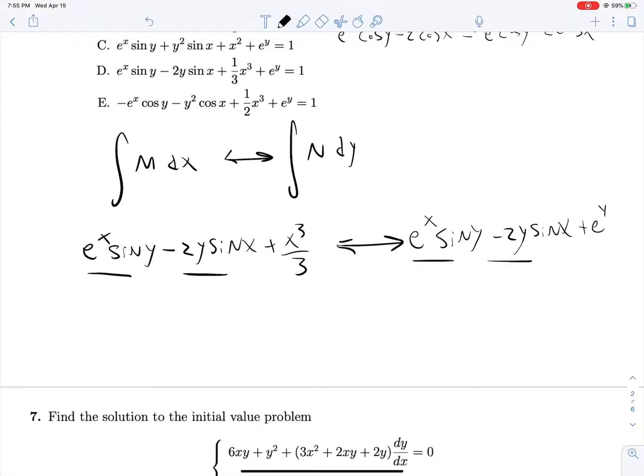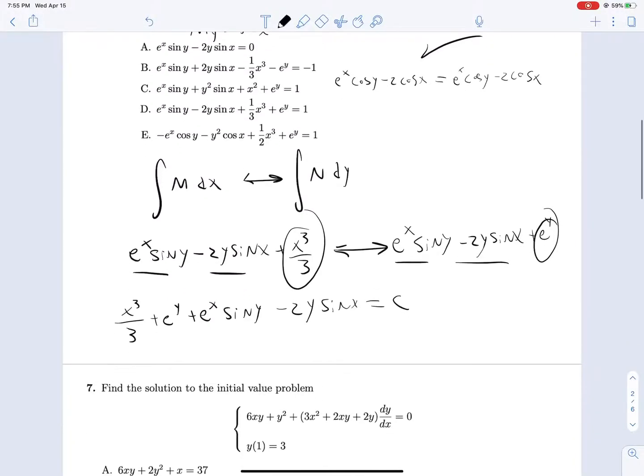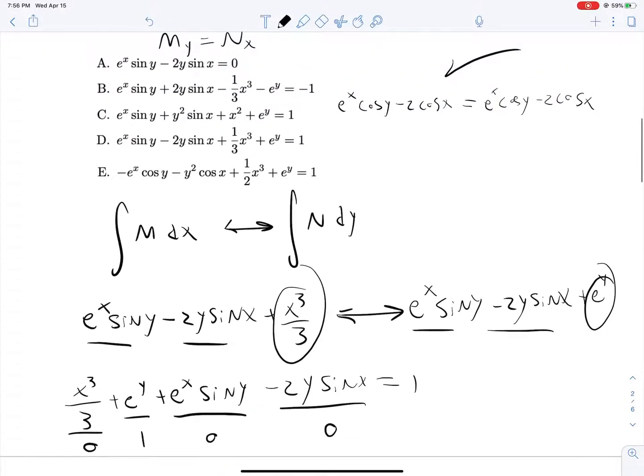So we have overlap in these terms. Our solution, just taking one of each of those overlapping terms and then both of our unique terms, we get x cubed over 3 plus e^y plus e^x sin y minus 2y sin x is equal to c. And we can solve this using y at 0 equals 0. Solving that, we get this term becomes 0, this term becomes 1, this term becomes 0, and this term also becomes 0. So we are left with c is equal to 1. So we're looking for our x cubed over 3. Yep, that looks good. D is our correct answer.